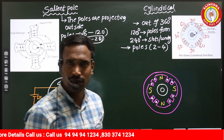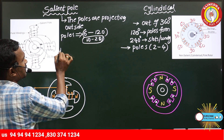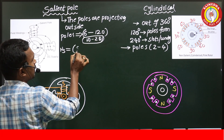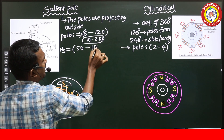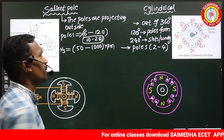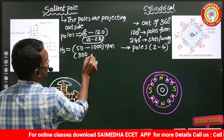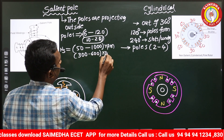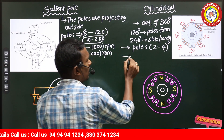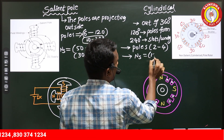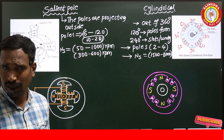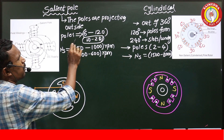For a 50 Hz supply, with 120 poles the speed is 50 RPM, and with 6 poles the speed is 1000 RPM, so the speed range of the salient pole machine is 50 to 1000 RPM, practically 300 to 600 RPM (300 RPM for 20 poles, 600 RPM for 10 poles). For the cylindrical type, the synchronous speed range is 1500 to 3000 RPM for a 50 Hz supply.